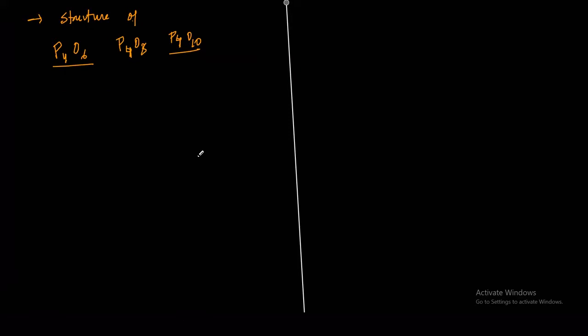A student asked why bismuth oxides are more basic than nitrogen oxides. The answer is that going down the group, electronegativity decreases, so the tendency to accept electrons is less — nitrogen accepts electrons maximum. Therefore, Lewis acid behavior of these oxides decreases down the group. When acidity decreases, basicity increases, so basic character is more going down the group.